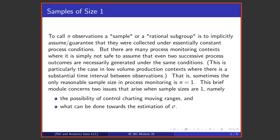To call several observations a sample or a rational subgroup really implicitly assumes or guarantees that those observations are collected under essentially constant physical conditions. There are many process monitoring contexts where that makes no sense — where it's not safe to assume that even two successive process outcomes are generated by the same physical circumstances.